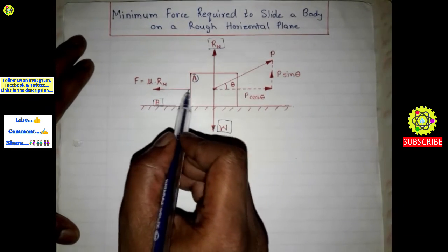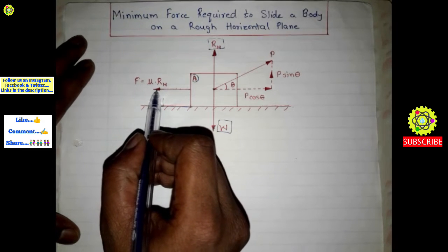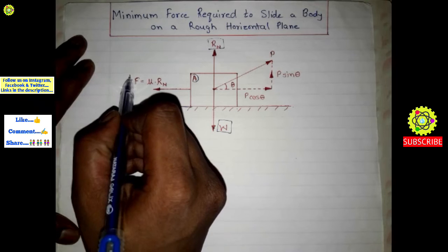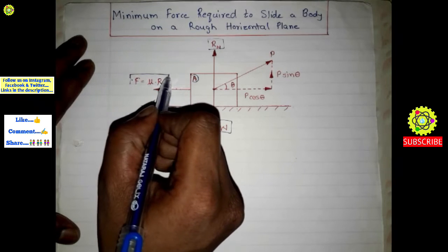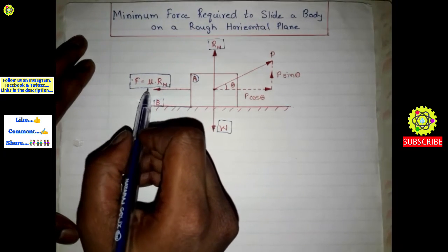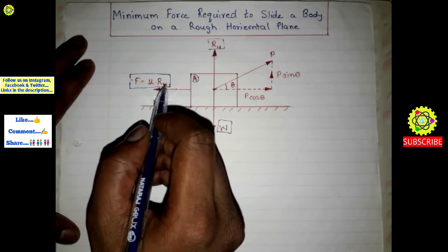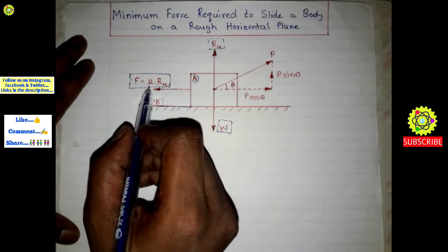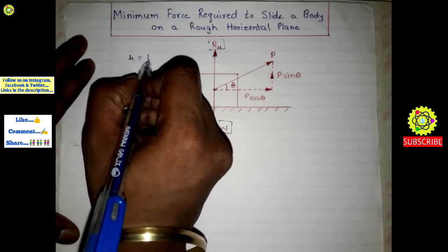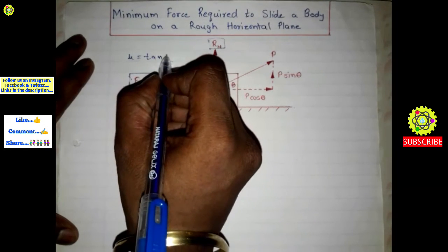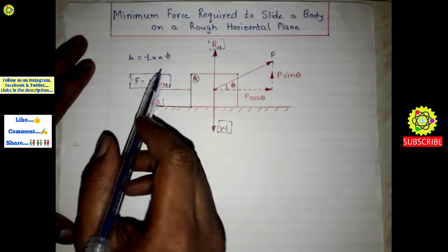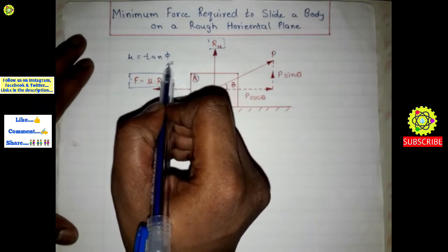This is the frictional force acting in the leftward direction. Frictional force F is equal to μRn, where μ is the coefficient of friction and Rn is the normal reaction. Also, μ is equal to tan φ, where φ is the angle of friction.